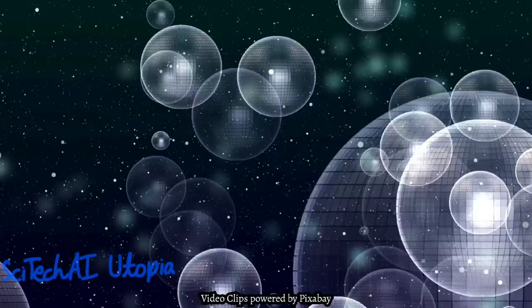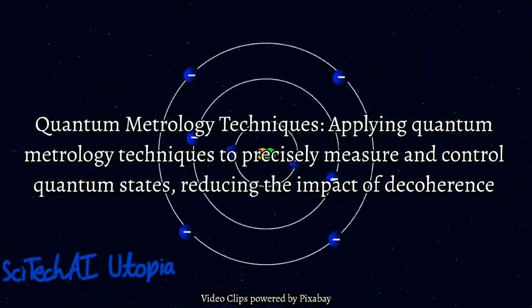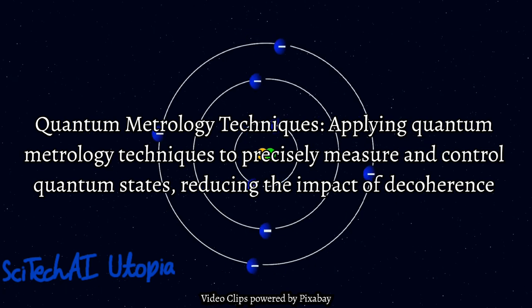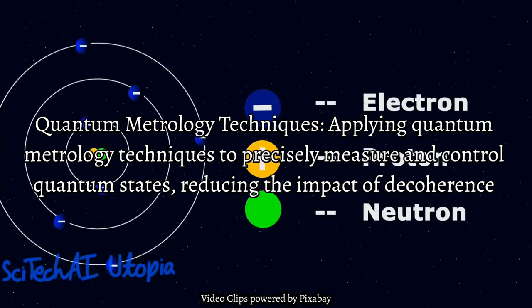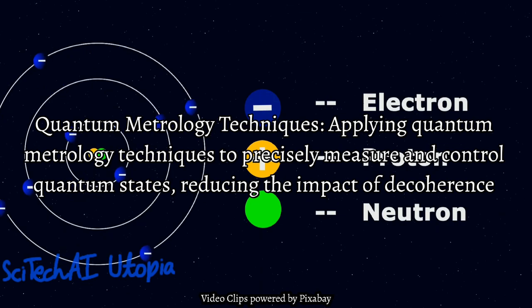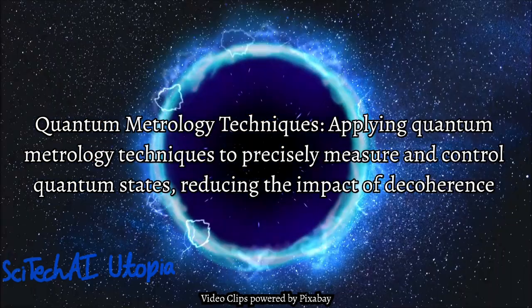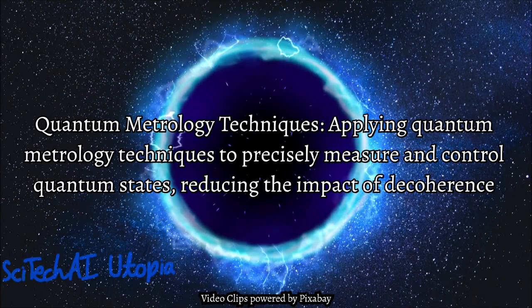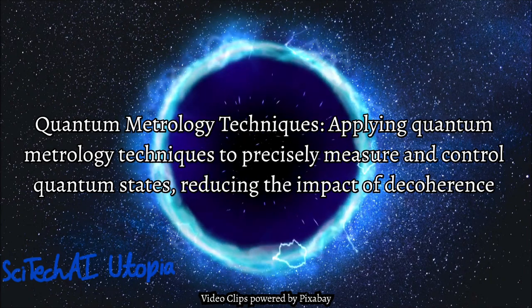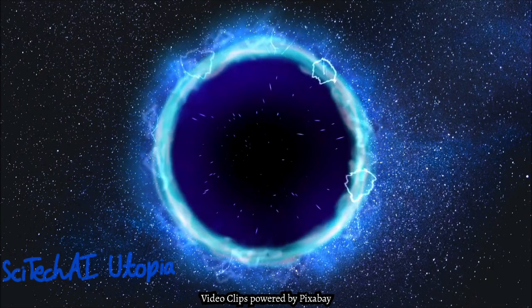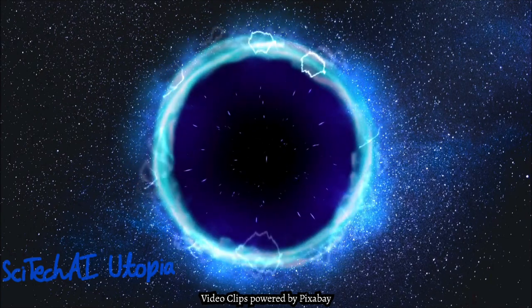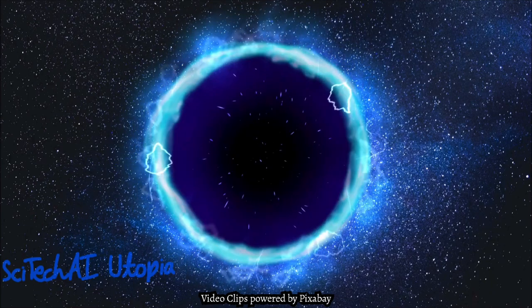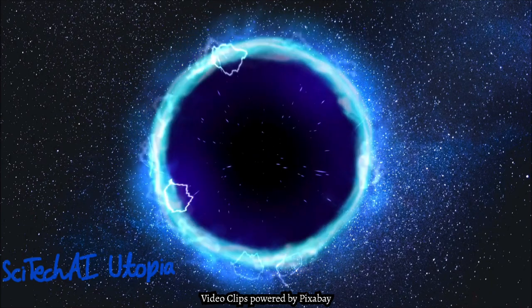Solution 21: Quantum Metrology Techniques. Quantum metrology leverages quantum states for precision measurements, and these techniques are applied to control and stabilize quantum systems. By employing quantum-enhanced measurement strategies, quantum metrology reduces uncertainties in parameter estimation, contributing to error reduction and enhancing the robustness of quantum computations against decoherence.